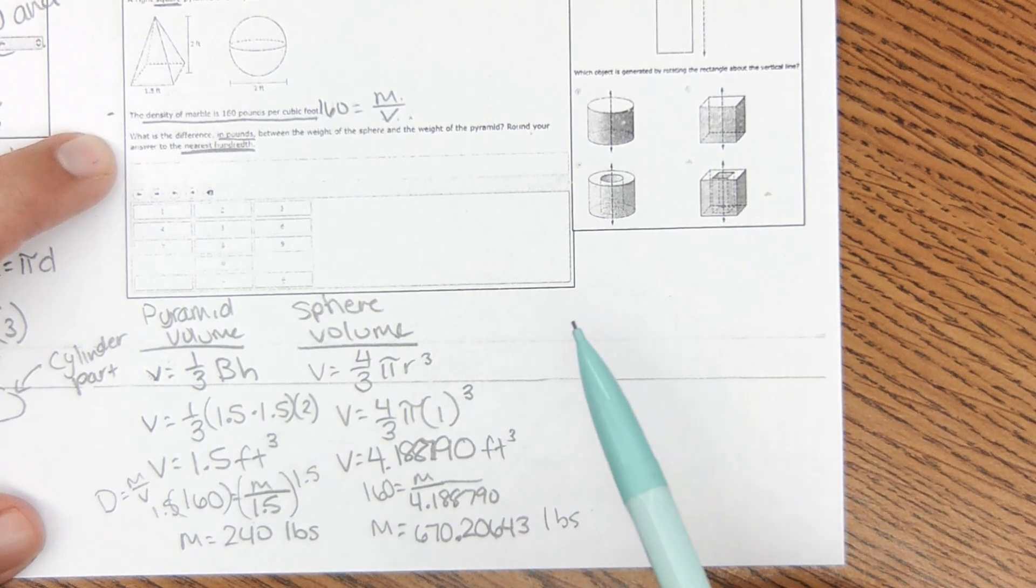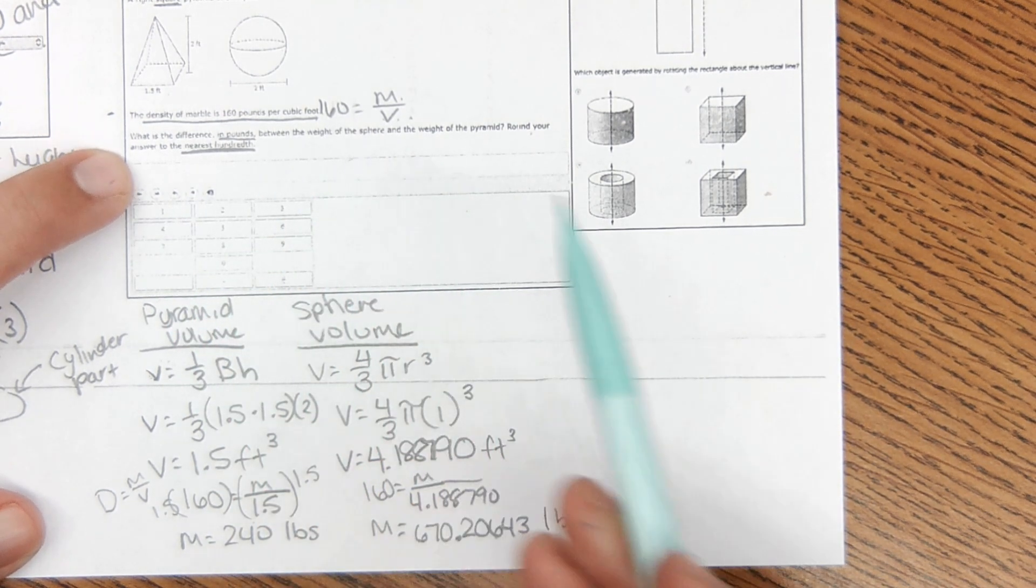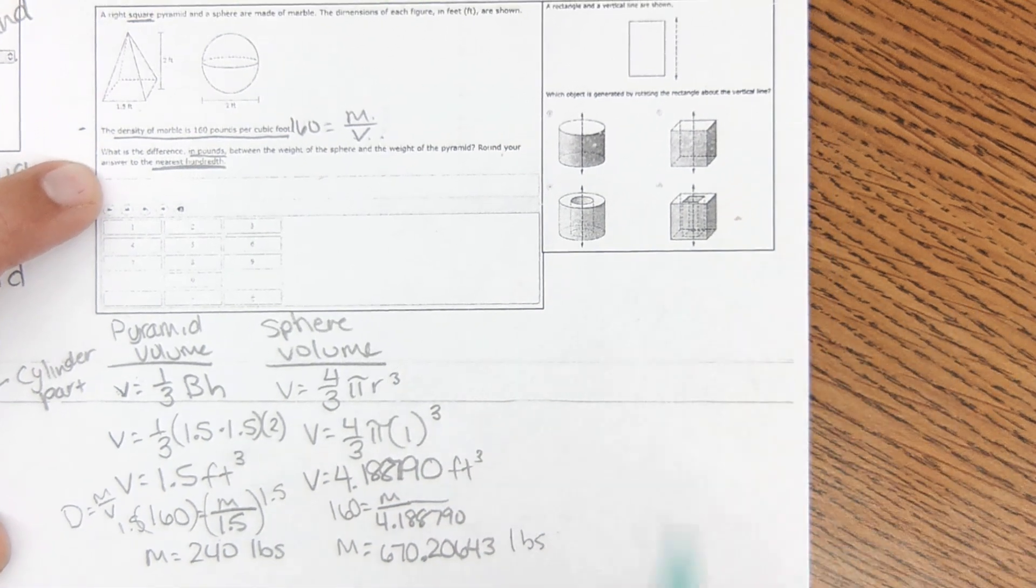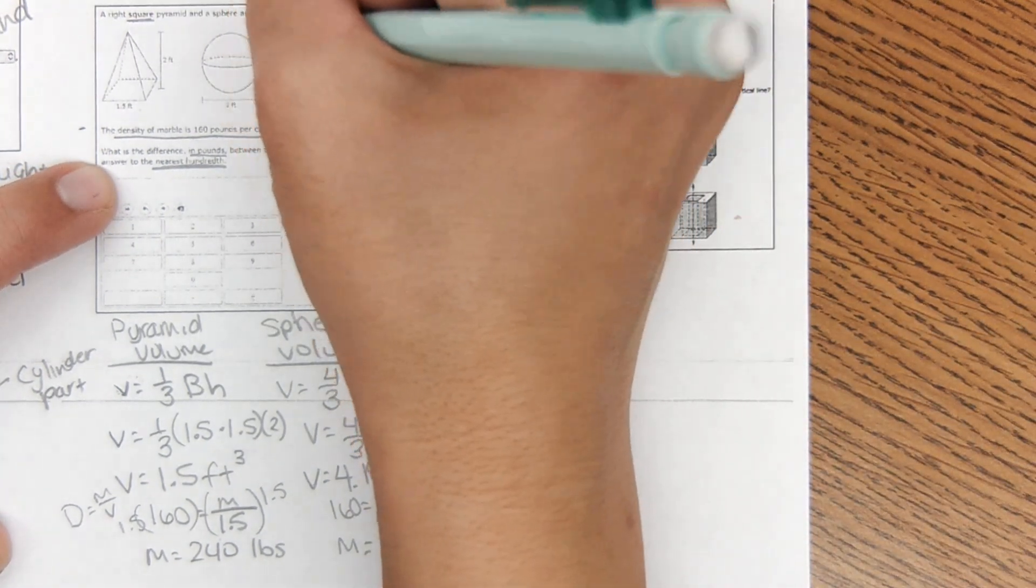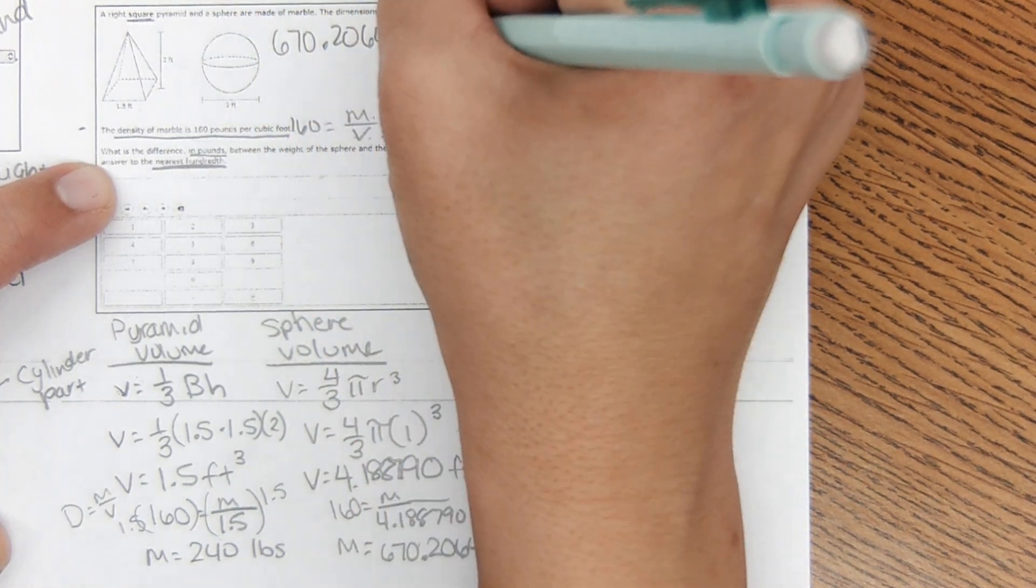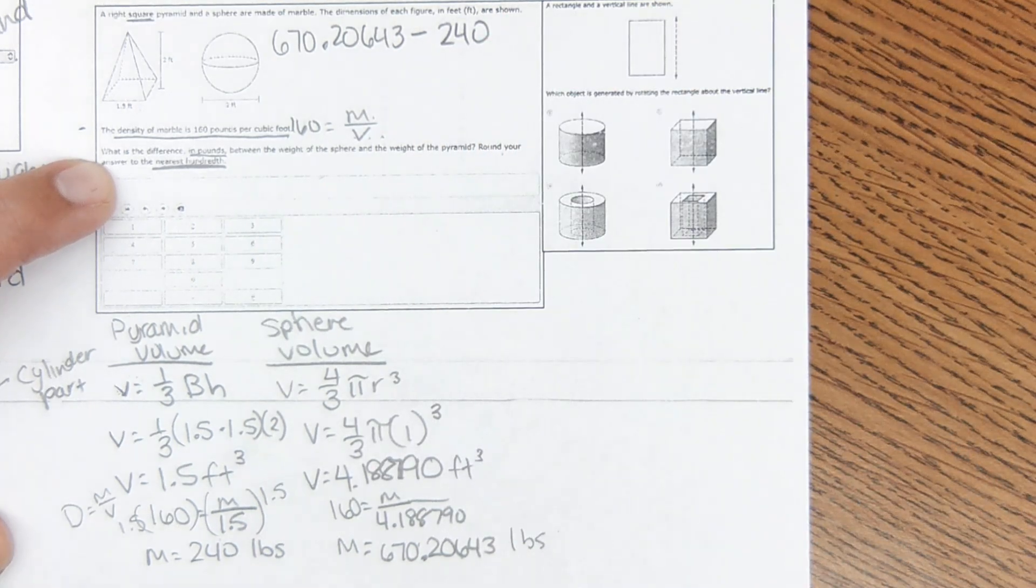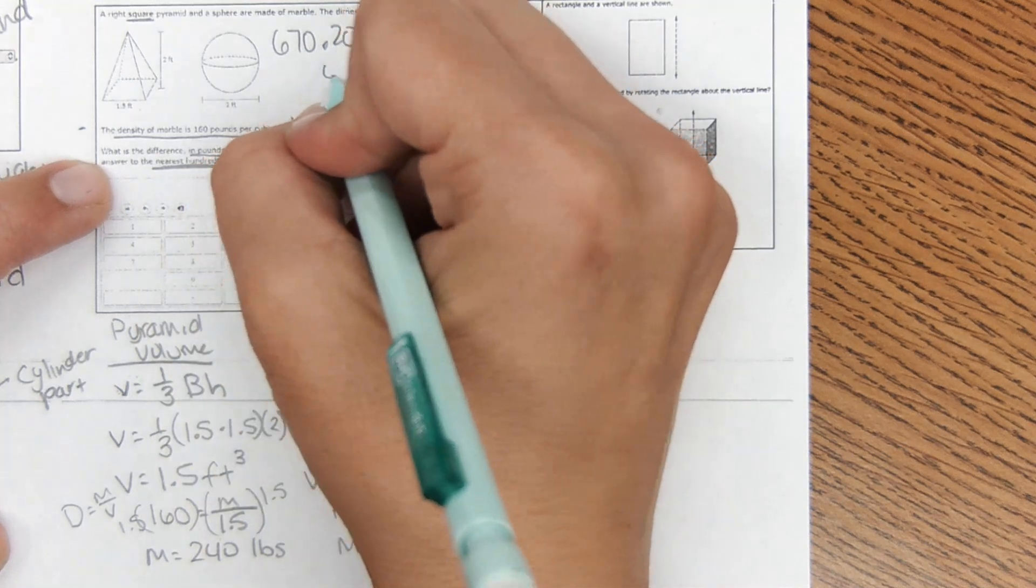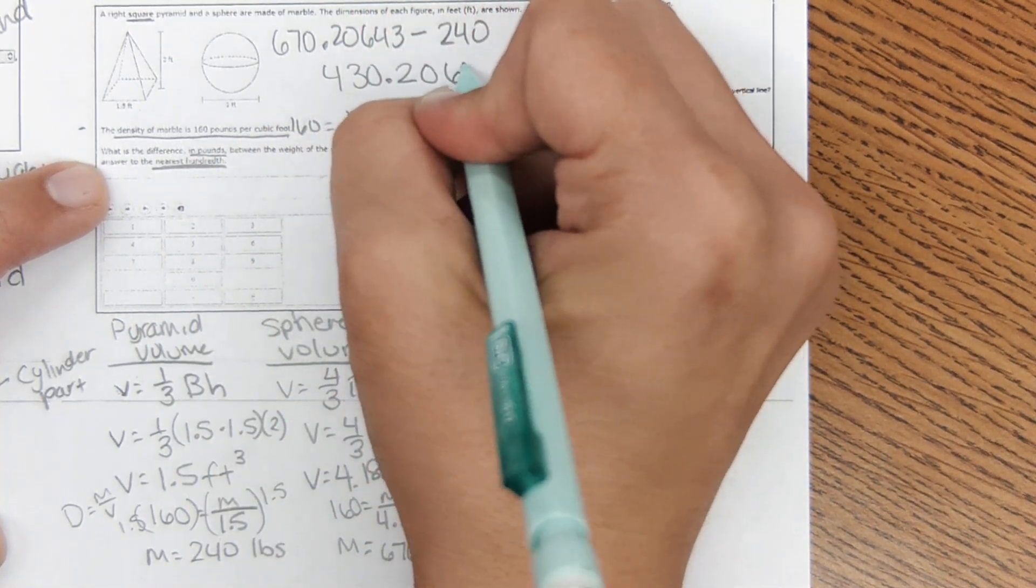Okay, then from here it wants to know the difference in pounds between the weight of the sphere and the weight of the pyramid. So my last step is to subtract these two numbers. I want to do this up here, so we get 670.20643 minus 240 pounds, and that equals 430.2064.